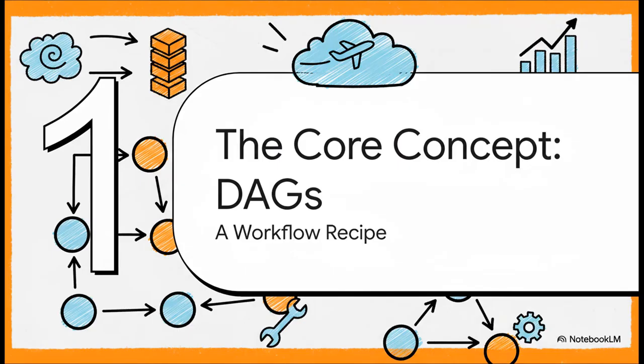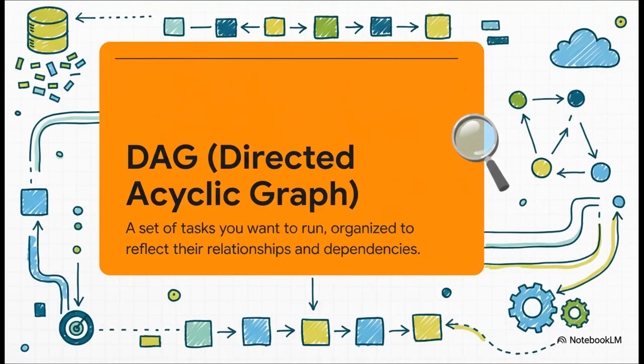First things first — let's talk about the single most important concept in Airflow: the DAG. The best way to think about a DAG is just like a recipe. The acronym stands for Directed Acyclic Graph. Directed just means your steps have a clear one-way flow. Acyclic is super important — it means no infinite loops. And Graph just means it's a set of tasks that are all connected.